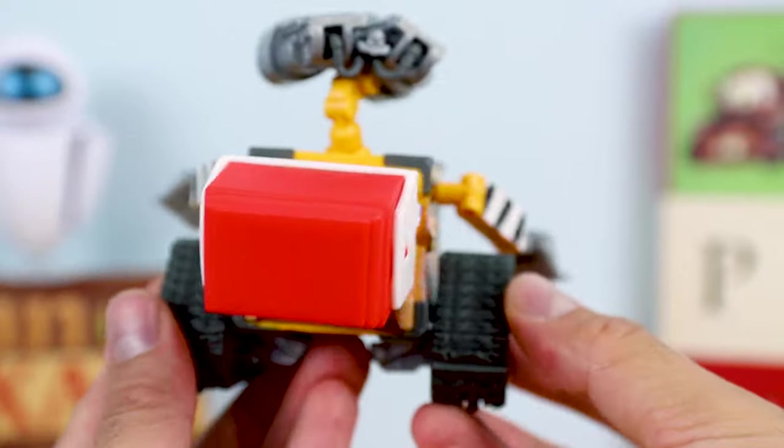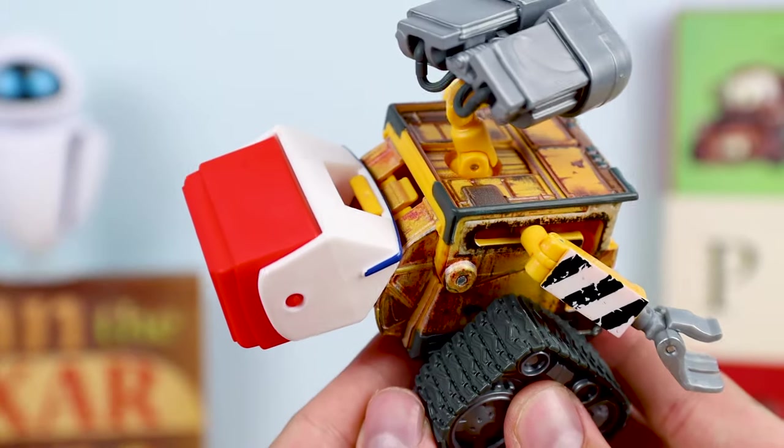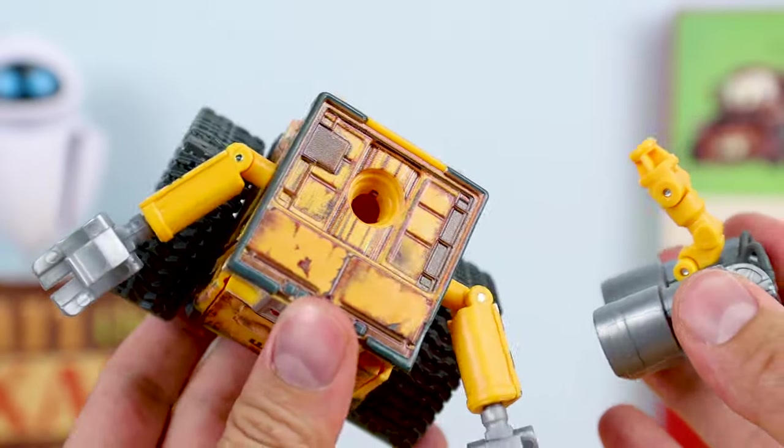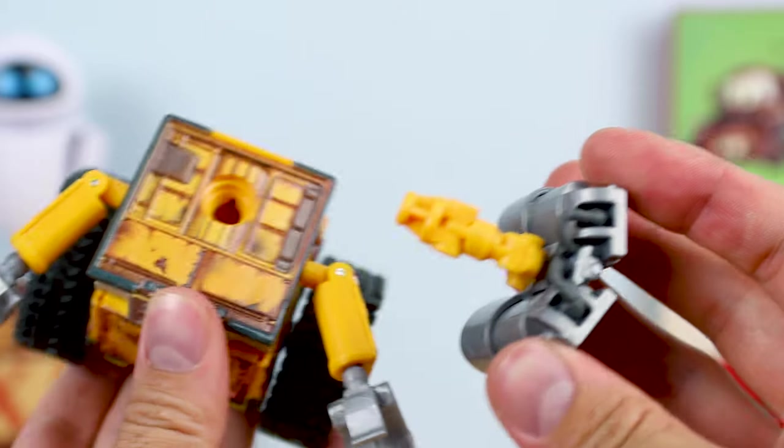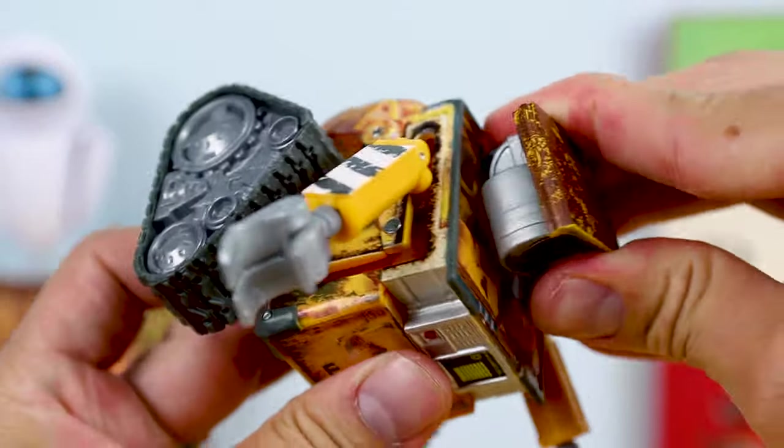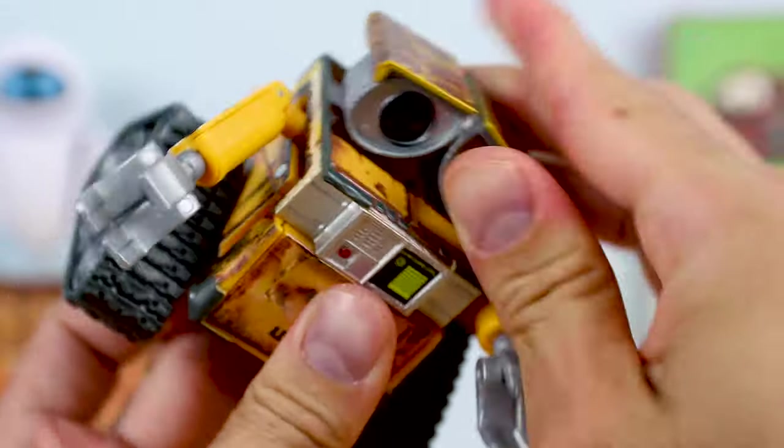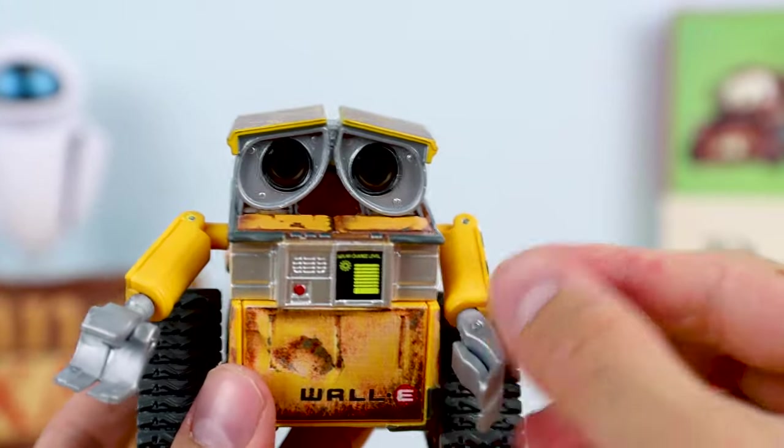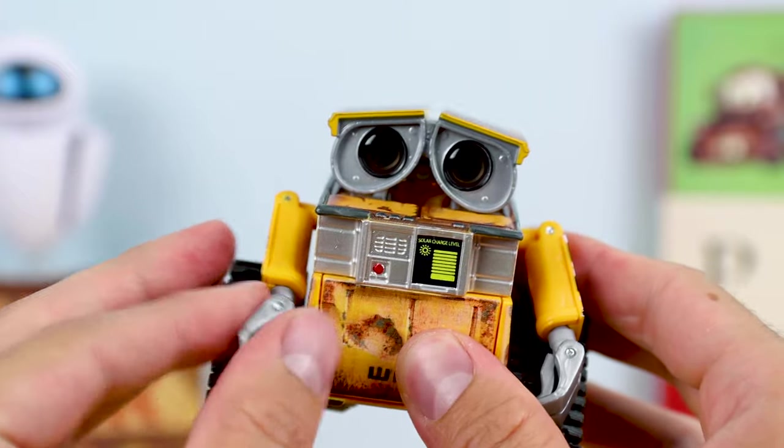Next up, I just removed the main head so I can show you his more shy or scared sunken in look with the second head here that's included. Both heads can be removed and inserted fairly easily. And there you go. I absolutely love this look. This is just so Wally to me. Very in character.